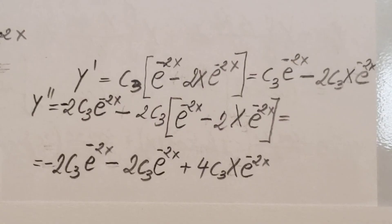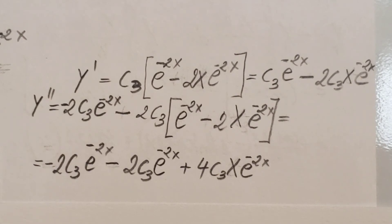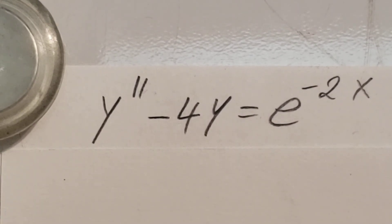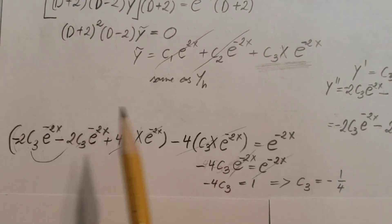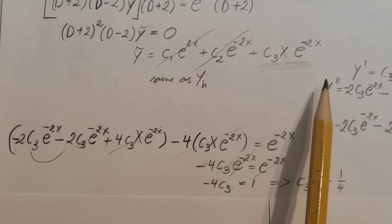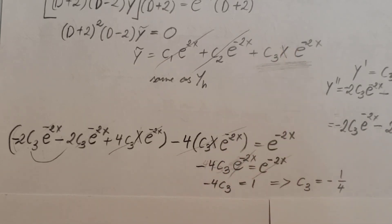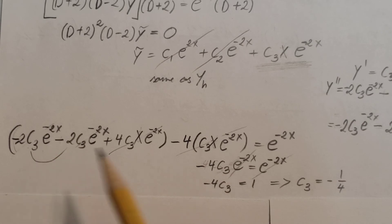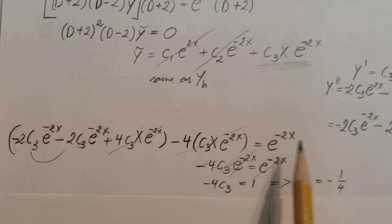Here are y prime and y double prime. Now let's go ahead and plug them back into our main equation. All I did was take y double prime, plug it in, then subtract 4 times y, which equals the right-hand side as in the original equation. After putting terms together and simplifying, we get negative 4 c3 e to the negative 2x equals e to the negative 2x.